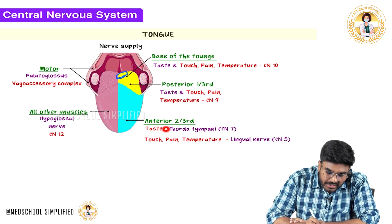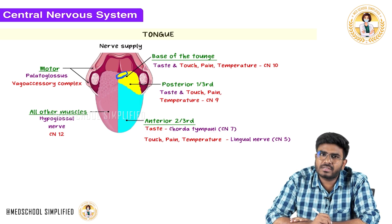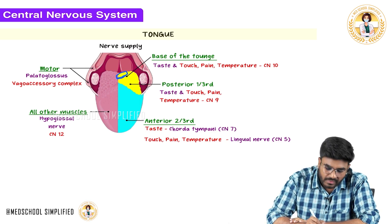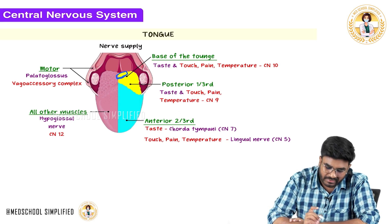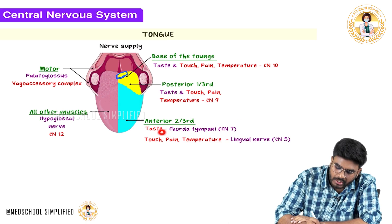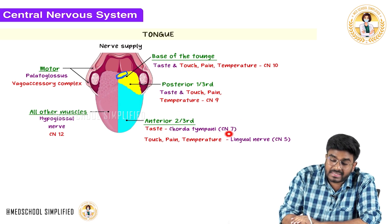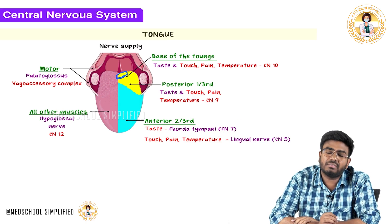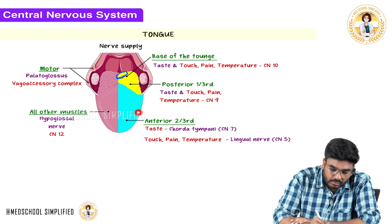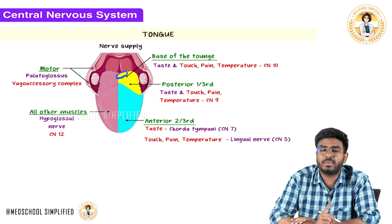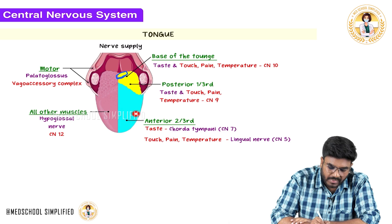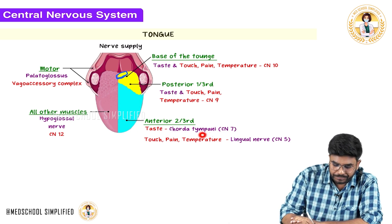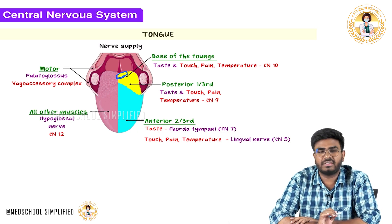Now let's talk about the special sensation — taste. Taste sensation from the anterior two-thirds of the tongue is carried by the 7th cranial nerve. The branch of the 7th cranial nerve is the chorda tympani, which is a branch of the facial nerve. So the chorda tympani carries taste sensation from the anterior two-thirds of the tongue.